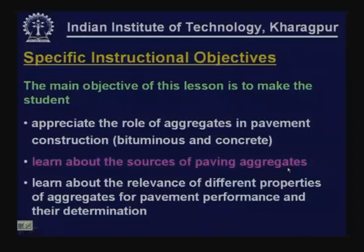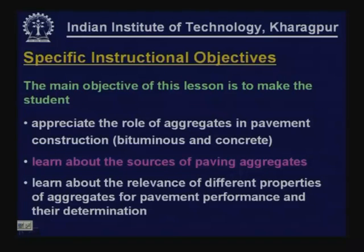The main objective of this lesson is to make the student appreciate the role of aggregates in pavement construction of both types of pavements — bituminous as well as concrete pavements — learn about the sources of paving aggregates, natural and manufactured aggregates, learn about the relevance of different properties of these aggregates as far as pavement performance is concerned, and also to learn about the determination of these properties.